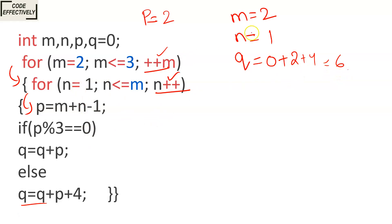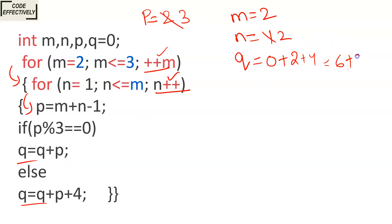N increments to 2. It checks: 2 is less than or equal to M (which is 2), condition true. P equals M plus N minus 1: 2 plus 2 is 4, minus 1 gives P equals 3. P modulus 3 equals 0 — 3 divided by 3 has remainder 0, condition is true. So Q equals Q plus P: 6 plus 3 gives Q equals 9.